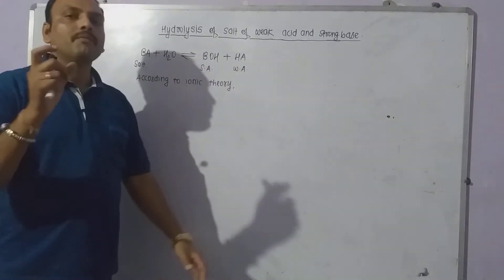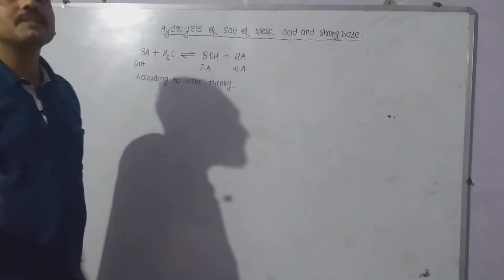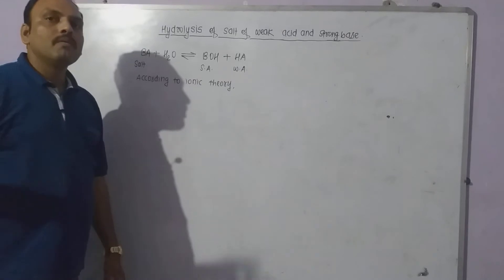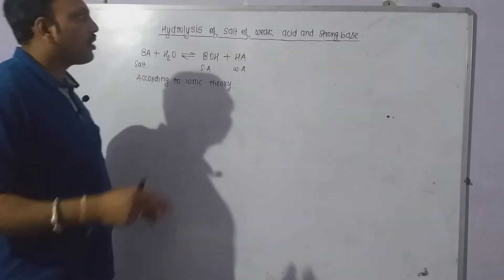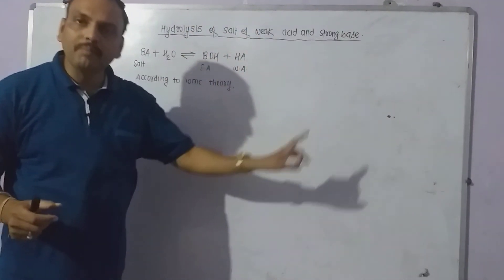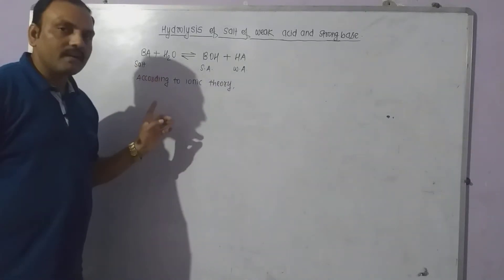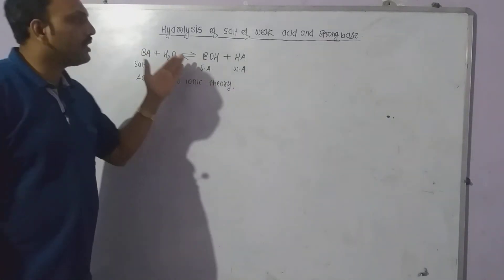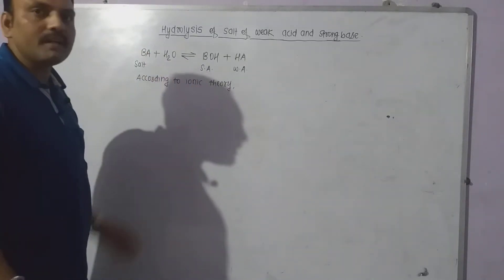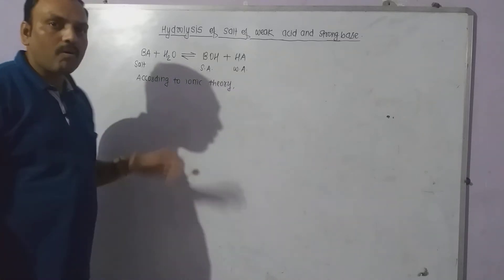When salt BA, that is salt of weak acid and strong base, is dissolved in water, it gives following equilibrium. This is hydrolytic equilibria.